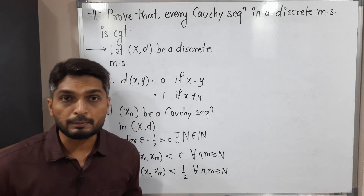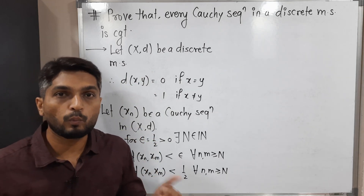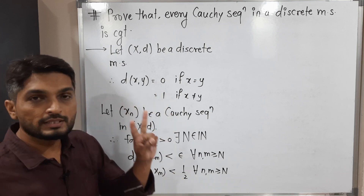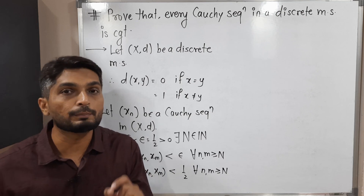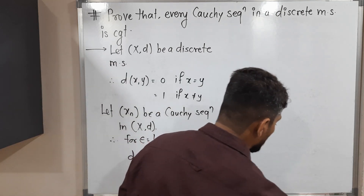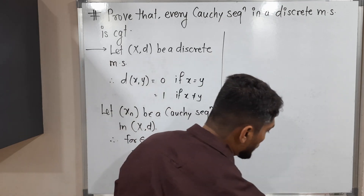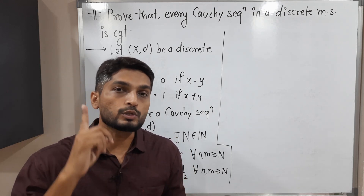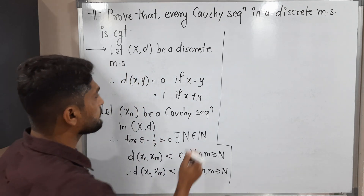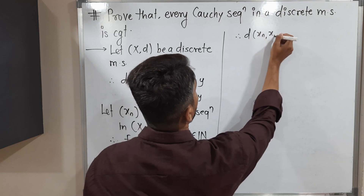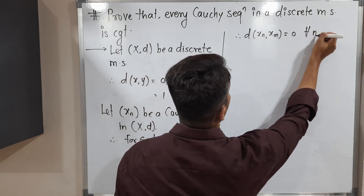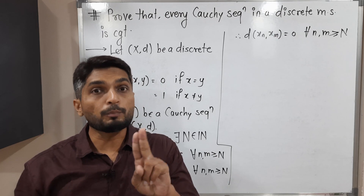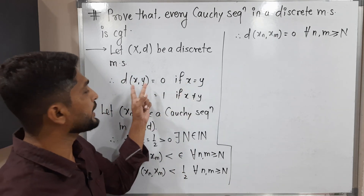But right now we are in a discrete metric space which has only two distances: 0 and 1. Here we are getting distance less than 1/2. We have two distances, 0 and 1, and the distance is less than 1/2, so the distance will be 0 — since 1 cannot be less than 1/2. Therefore, D(x_n, x_m) is equal to 0 for all n, m greater than or equal to capital N. We get distance 0 when two points are the same.